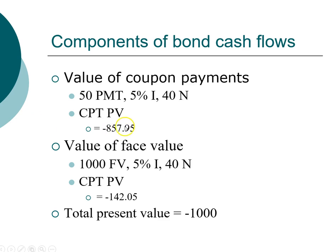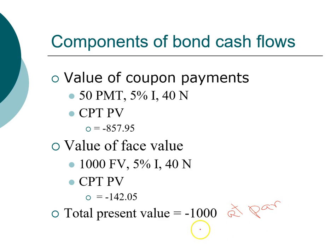Of the thousand dollars you pay for the bond, eight hundred and fifty-eight dollars is returned as coupon payments and only one hundred and forty-two dollars is returned as face value. A much greater proportion is returned through coupon payments. When the bond's price equals the face value — both at a thousand dollars — the bond is selling at par. This only happens when the coupon rate equals the yield to maturity.